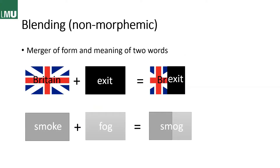Then we have blending, another non-morphemic word formation process, where both form and meaning are merged. For example, 'Brexit' is a result of 'Britain' and 'exit' — BR from Britain and 'exit' to form 'Brexit,' which is the exit of Britain from the European Union. So you can see both form and meaning are merged. And it works the same with 'smoke' and 'fog,' which together form 'smog.'